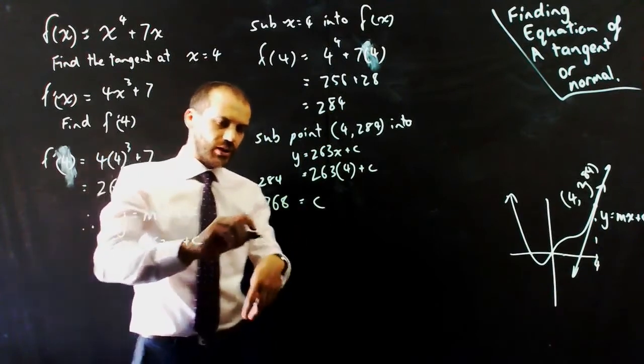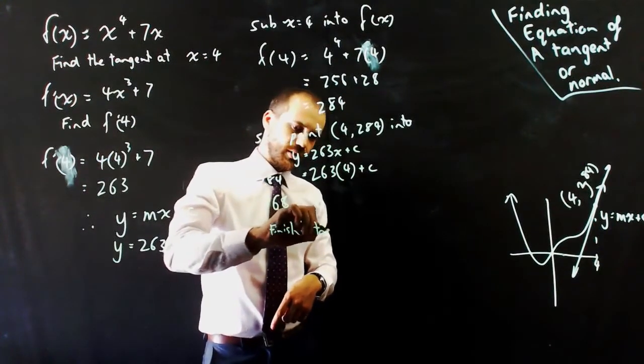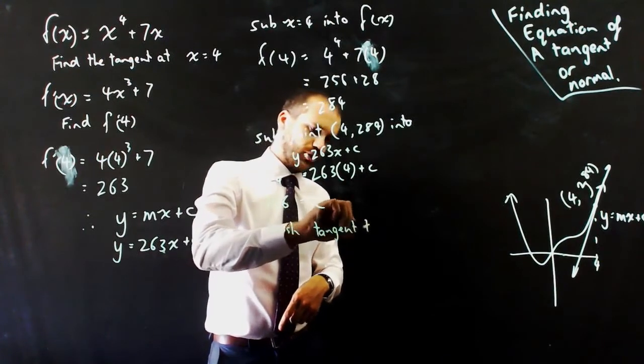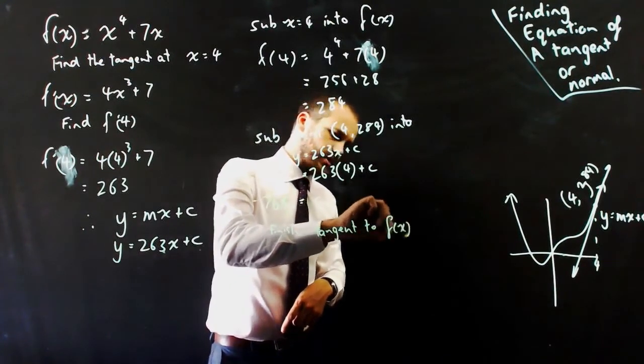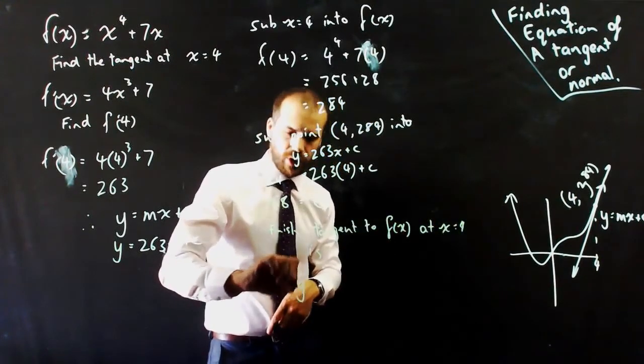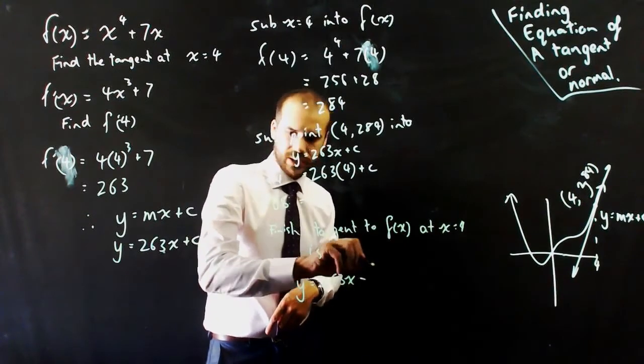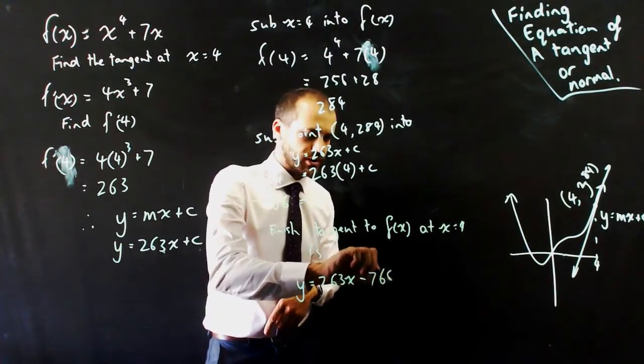Okay, that's really the end of it. I just need to finish. The tangent to f(x) at x = 4 is y = 263x - 768.